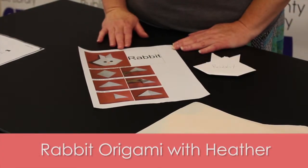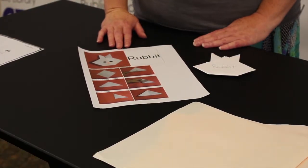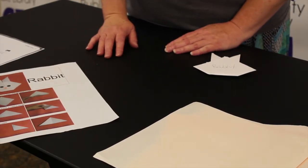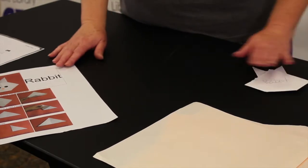Let's try a rabbit. This rabbit, you have to be more precise. You have to be more exact in your folding than the fox, cat, or dog. So we have a rabbit here.